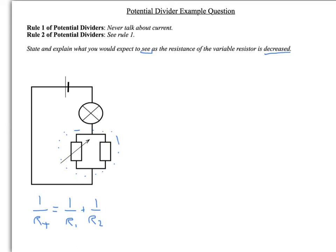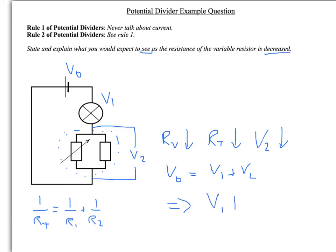So what does that mean? Well, if we call that V2, as the resistance of your variable resistor goes down, your resistance total is going to go down, which means your V2 is going to go down. And you also know that, using your voltage law, V0 is equal to V1 plus V2, which means that your V1 has to increase if you reduce V2.